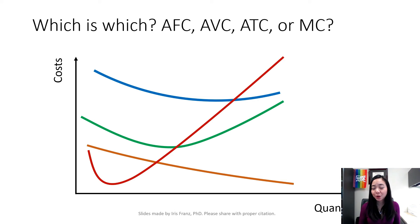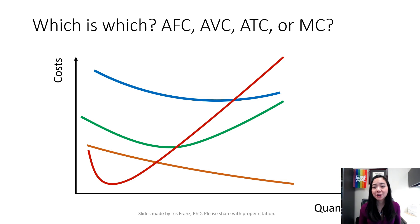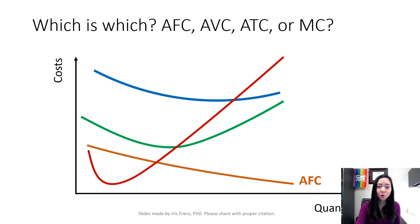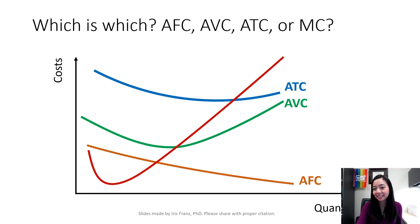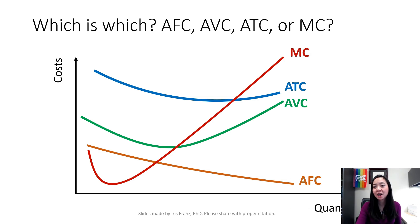Suppose I take away all the labels — would you be able to tell which curve is which? First, you know average fixed cost has to go down. Then, average total cost has to be higher than average variable cost because ATC is the sum of AVC and AFC. Finally, the marginal cost curve has to go through the lowest point of both average total cost and average variable cost. So there is no way you mix up these four curves.